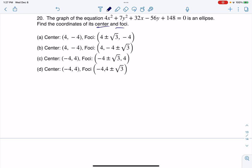So what I'm going to do is I'm going to take the x terms and group them. So 4x squared plus 32x. And I'm going to give myself a little space and then I'm going to do 7y squared minus 56y. And I'm going to send the 148 to the other side through subtraction, which is why it's negative now.